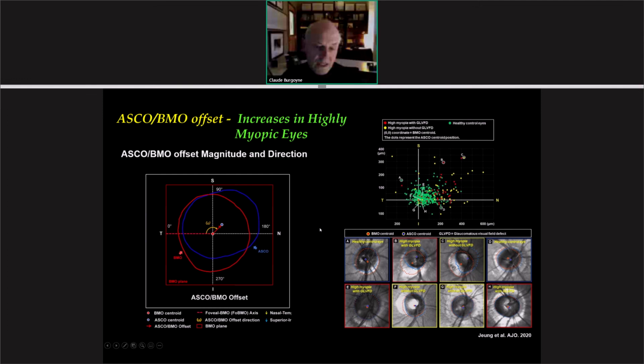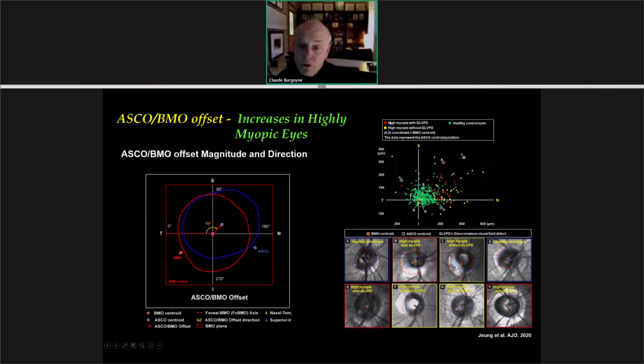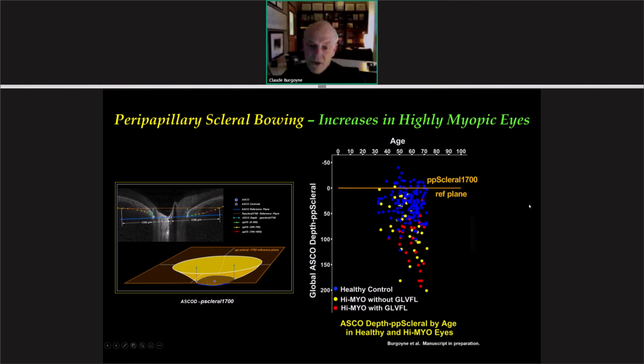We've begun to push our work into highly myopic eyes. I'll show you data on the offset of the anterior scleral canal opening in a subset of normal eyes depicted in green, age-matched to a group of highly myopic eyes with glaucoma in red and highly myopic eyes without glaucoma in yellow. You can see that the yellow and red points are generally further offset relative to the non-highly myopic eyes, but there is overlap. In this instance, glaucoma eyes are not significantly separated from non-glaucoma eyes by this parameter, although this is a very small, early sample.